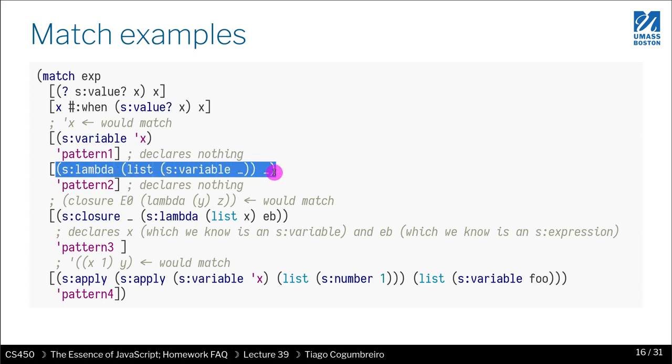Another example is here. What is this pattern matching saying? This pattern is saying that I want a lambda that contains exactly one argument, and I don't care. Underscore is don't care. I don't care about the name.